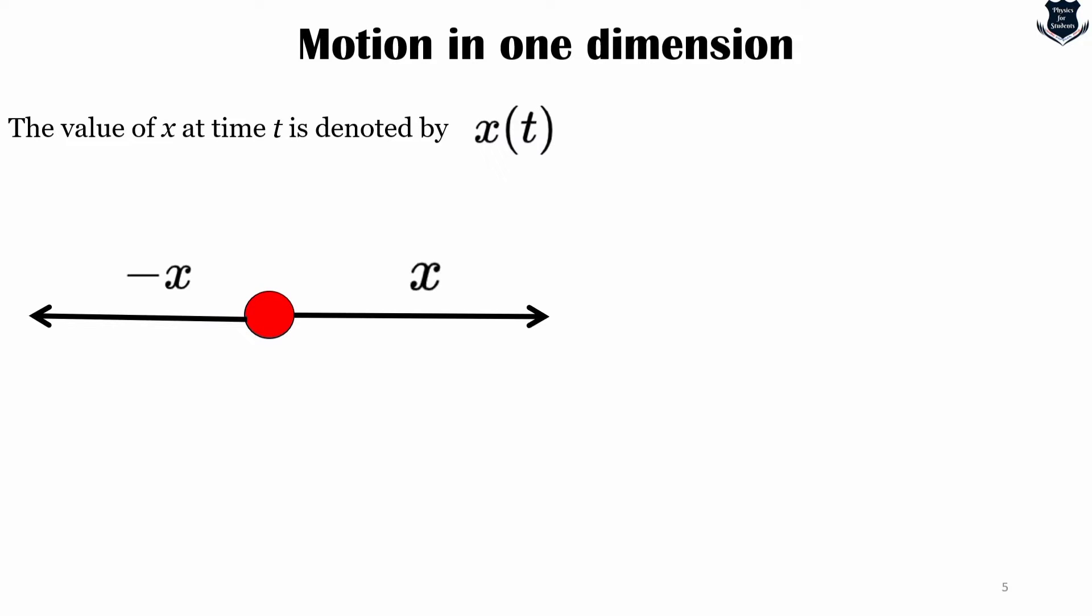Which direction is taken as positive or negative is something totally a matter of convention. The numerical value of x clearly depends on the unit of length, for example if you are using feet, meter, or miles. Unless the particle is at rest, x will definitely vary with time. The value of x at time t is denoted by x(t) as I have shown you on the screen.